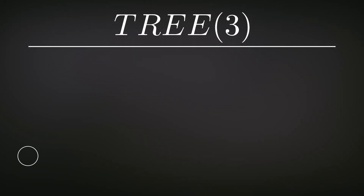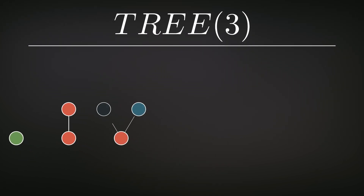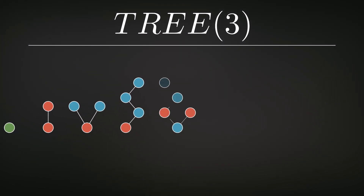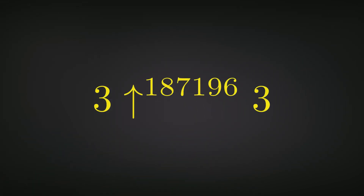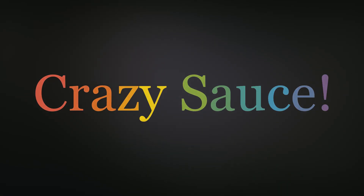Now, tree of 3. We start off with the same single dot, but then we can make this tree, and this tree, and that one, and that one, and that one — and we can go on and on and on, but not forever. The number of trees in this sequence is still finite, but it's unfathomably large — so large, in fact, it puts Graham's number to shame. To give you a point of reference, an extremely weak lower bound for tree of 3 is Graham's function iterated that many times. That is just crazy. That's how large this number is.